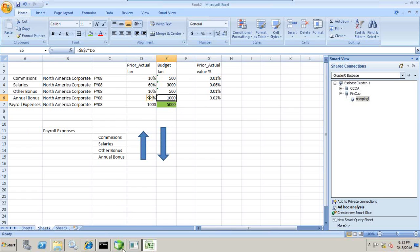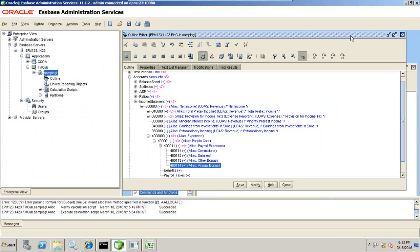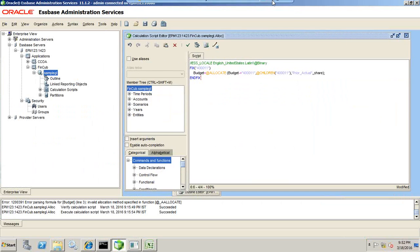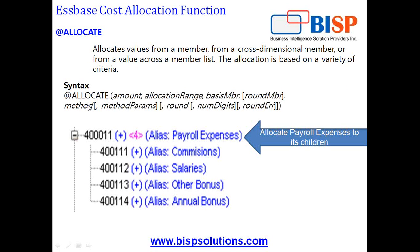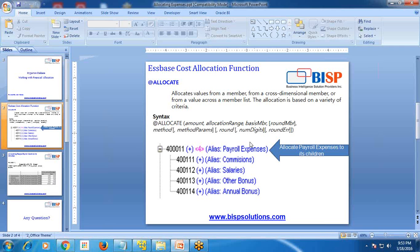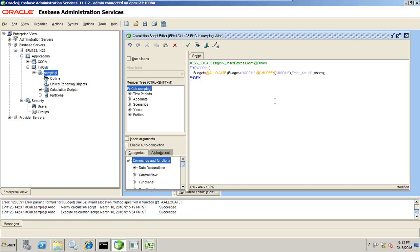Now let's see how to do this in a space. In a space there's a function called the ALLOC function. What are the arguments of the ALLOC function? First is the amount to be allocated. Second is the allocation range — in this example that's the children of payroll expenses. Third is the base member, or basis member — I'm allocating based on prior year actual. Other arguments are optional, as they appear in square brackets. You can see that except for the method argument, all other arguments are optional.